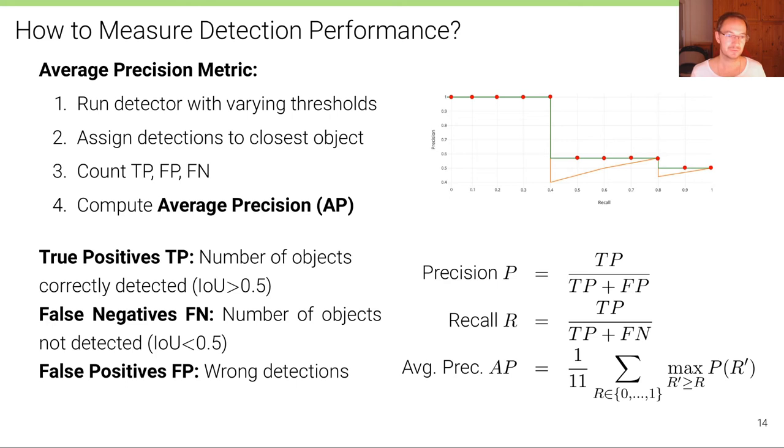And then based on these true positives, false negatives and false positives, we compute the so-called average precision. To do so, we compute the precision, which is TP over TP plus FP. And we compute the recall, which is TP over TP plus FN.